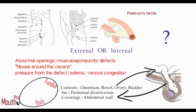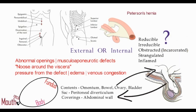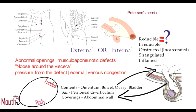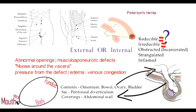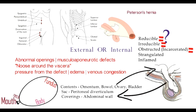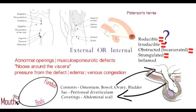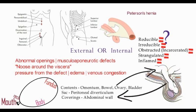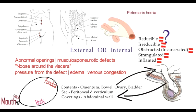Depending on the status of the contents, a hernia could be: reducible, where the contents completely reduce from the sac into the original cavity; irreducible, where the contents don't reduce either partially or completely due to adhesions, inflammation, or a narrow defect; obstructive, where the contents are small bowel with luminal obstruction; incarcerated, where the content is colon with luminal obstruction; and strangulated, where a viscera has compromised blood supply.